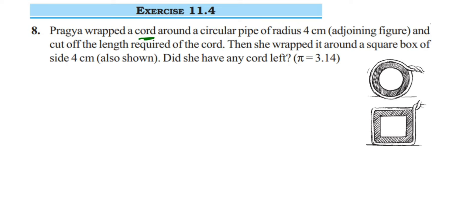Hey everyone, this is a question on Exercise 11.4, the eighth one, from the perimeter and area chapter of class 7. The question is: Pragya wrapped a cord around a circular pipe of radius 4 centimeters as shown in the figure, and cut off the length required of the cord.